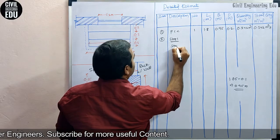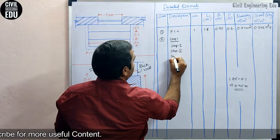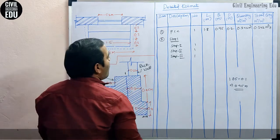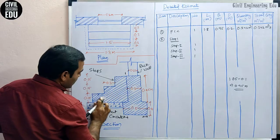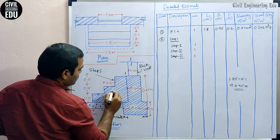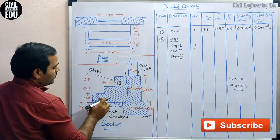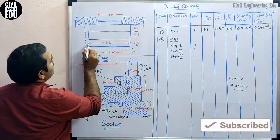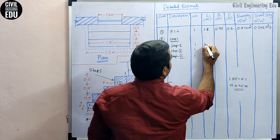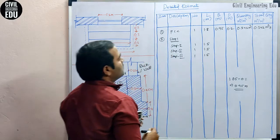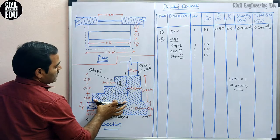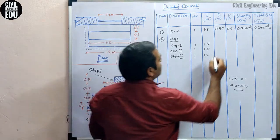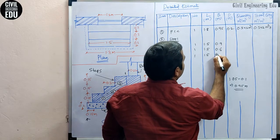For steps, let us take step one, step two, and step three — all three steps are one in number each. The length of step one: looking from the top, from here to here it is given as 1.5 meters, and the same applies for step two and step three. The breadth will be changing for each step: for step one it is 0.3 + 0.3 + 0.3 + 0.3 = 0.9 meters, next one is 0.6 meters, and next one is 0.3 meters.